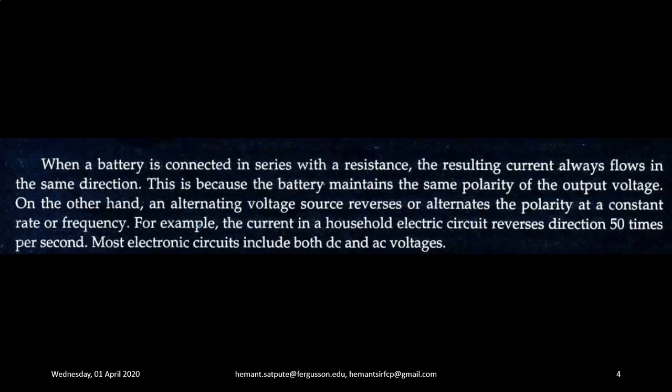AC fundamentals and sockets. When a battery is connected in series with resistance, the resulting current always flows in the same direction. This is because the battery maintains the same polarity of the output voltage irrespective of the time. On the other hand, an alternating voltage source reverses or alternates the polarity at a constant rate or frequency. For example, the current in a household electric circuit reverses its direction 50 times per second. Most electronic circuits include both DC and AC voltages.